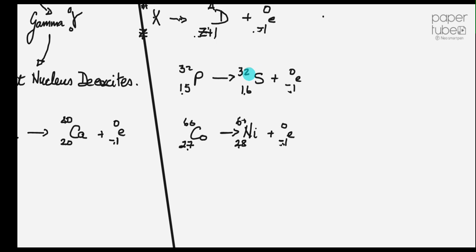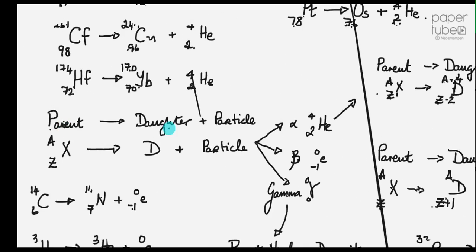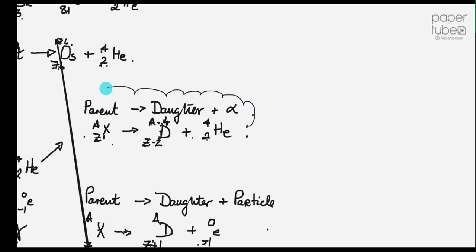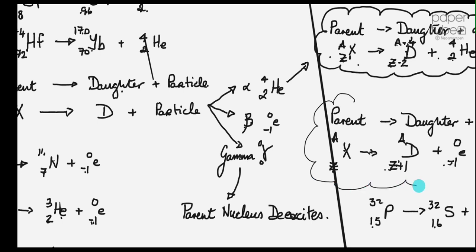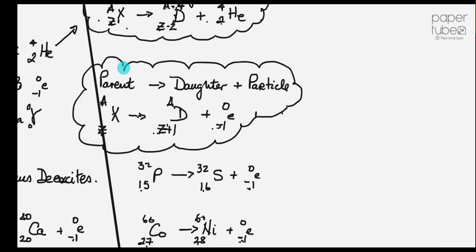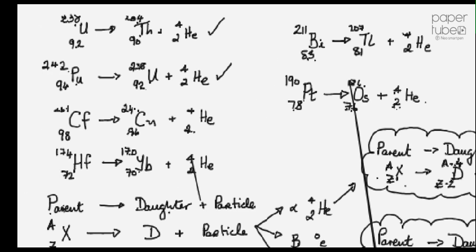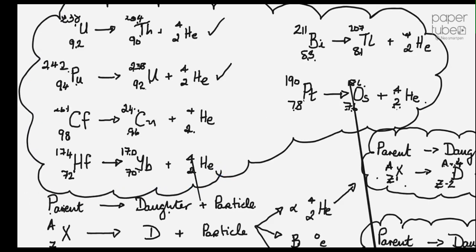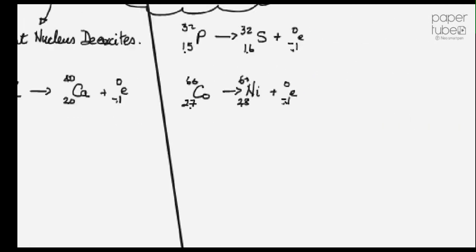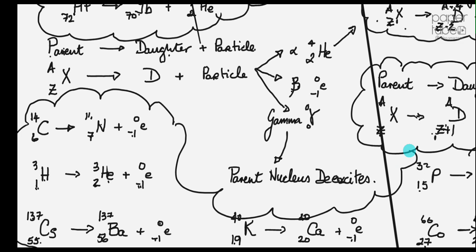So quick recap. Parent, daughter, particle. There are really only two we glory in, alpha and beta. There's the alpha one, there it is there. There's the alpha one, so important, learn it. Beta, there's the beta one. Ignore that big line, I have no idea how I got that. Over here we have all the alpha ones done, so we'll loop them all together. And over here we have all the beta ones done. Now sit down, learn it, and do the quiz. I'll talk to you shortly. Bye-bye.